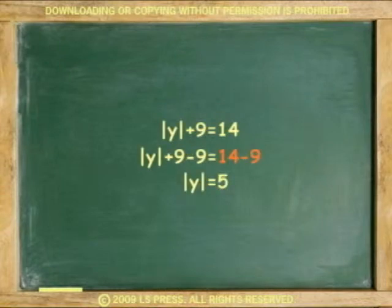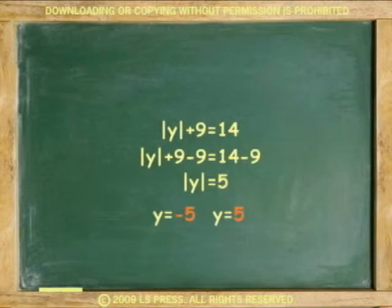Another example: absolute y plus 9 equals 14. Subtract 9 from both sides — 14 minus 9 — giving absolute y equals 5. Y could be either negative or positive.